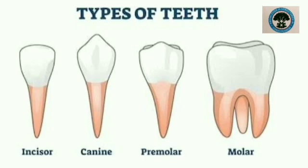The four kinds are incisors, canines, premolars and molars.